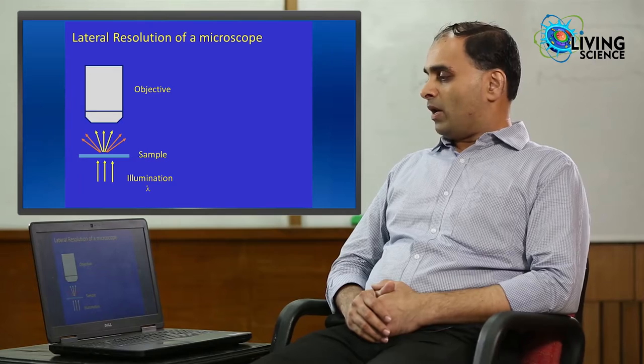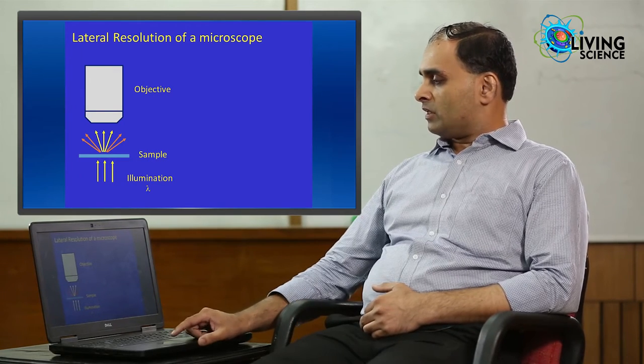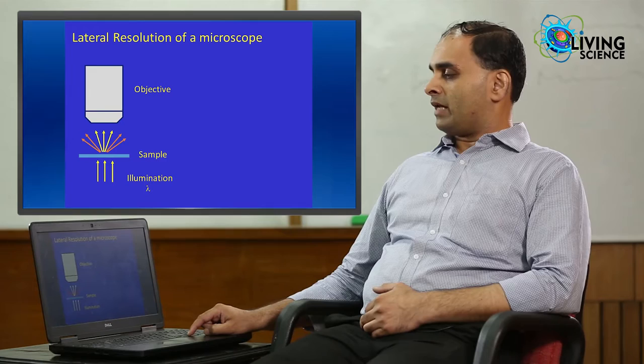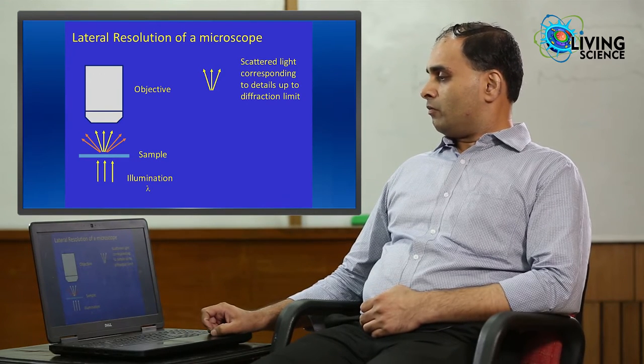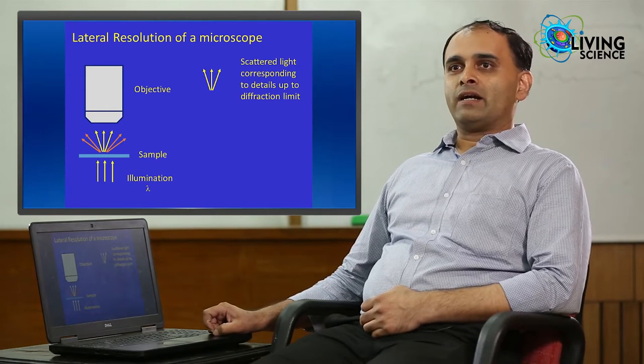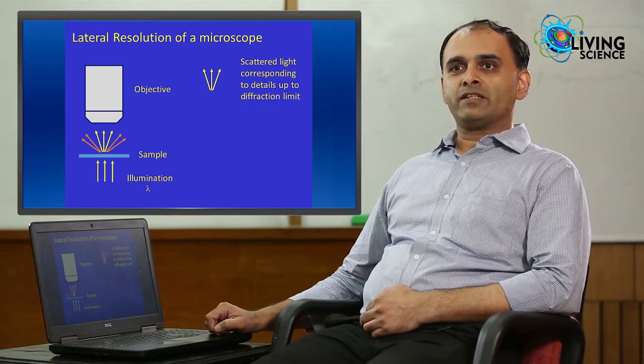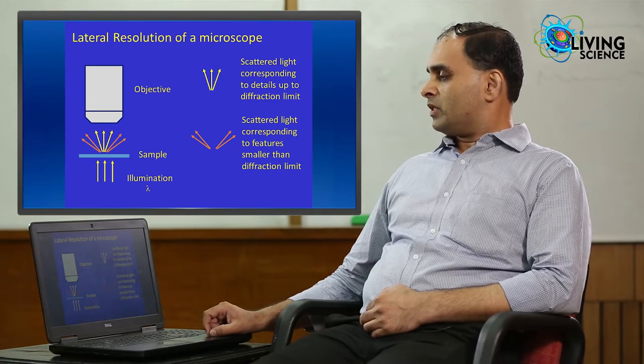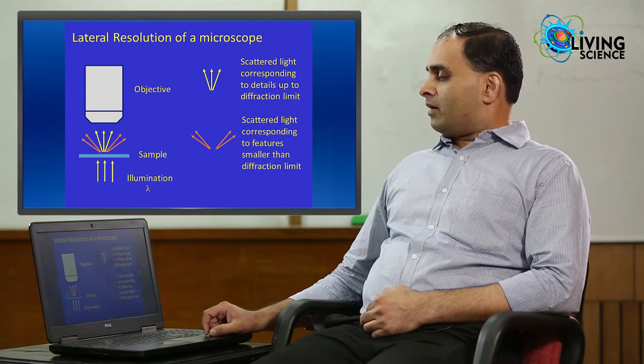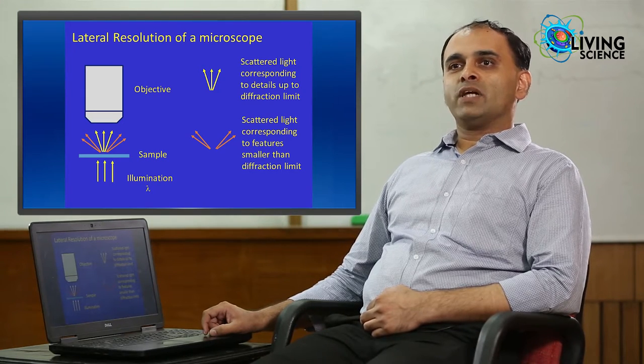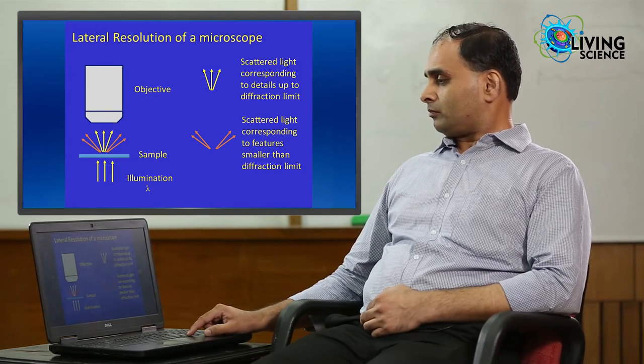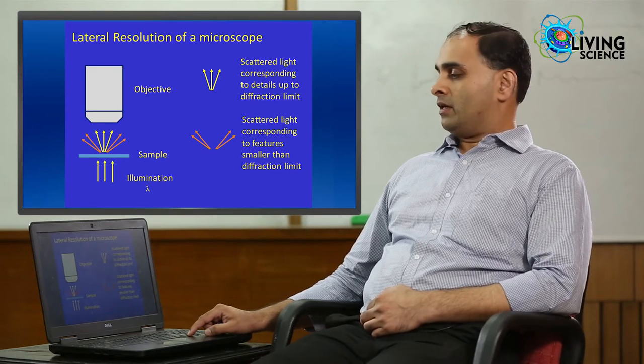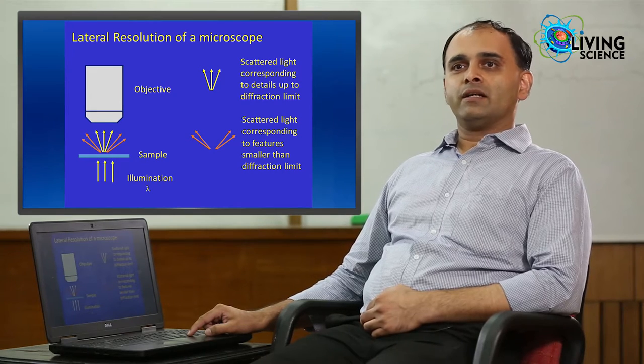When we illuminate a sample by this illumination as shown in this figure, we can see that the scattered light from the sample can be classified into two main categories. First, we see these yellow rays which refer to low angle scattering or scattering due to features that are much larger than the diffraction limit of the microscope. Secondly, we also see this orange colored rays which denote the scattered light that corresponds to features that are much smaller than the diffraction limit of the microscope. As you can see, only the yellow rays here contribute to image formation and information in these orange rays never contributes to the image and this is completely lost.